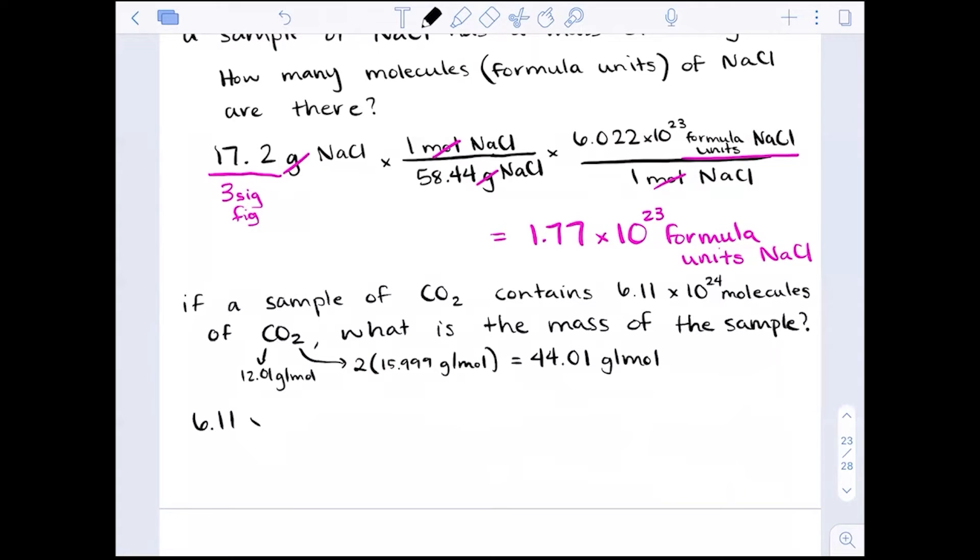The measured value that we are starting with is in molecules. So we would multiply it by one mole of CO2 over 6.022 times 10 to the 23rd molecules, and then multiply it by that molar mass. Making sure everything still cancels out, molecules with molecules, moles with moles, we're left with grams of CO2.